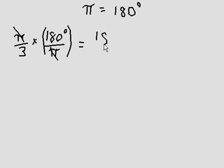Therefore, 180 degrees divided by 3 is 60 degrees. Pi over 3 is 60 degrees.